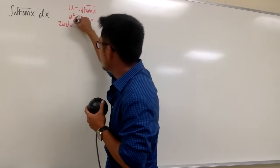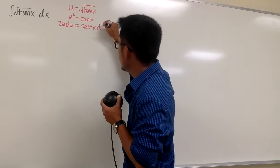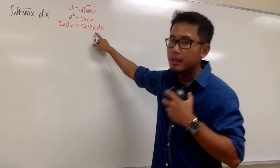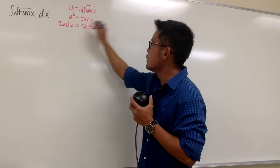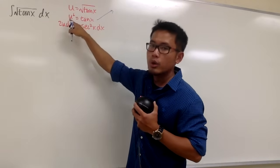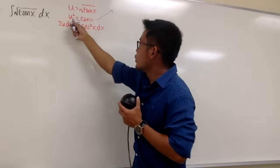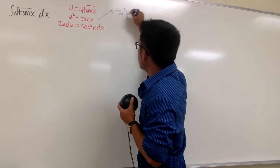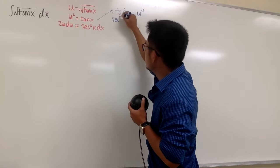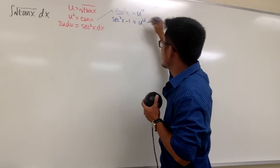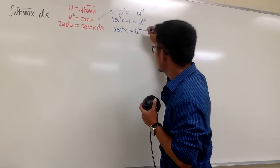You will get 2u du on the left-hand side, and this is equal to the derivative of tangent x, which gives us secant squared of x times dx. However, secant squared of x is not going to be in the u world. Therefore, we have to change it. We can utilize this equation: tangent x equals u squared, and we know tan²(x) equals sec²(x) minus 1. So squaring, we get u to the fourth power equals secant squared of x minus 1, and therefore secant squared of tangent x equals u to the fourth power plus 1.